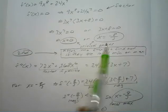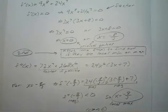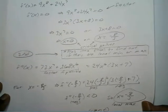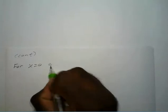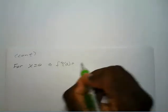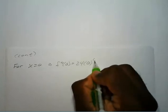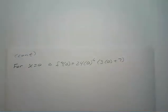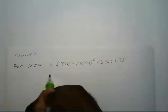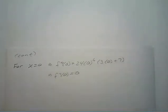Now we plug in our x equals 0. The second derivative at 0 equals 24 times 0 to the 6th power times 3 times 0 plus 7. This first part is 0 and this is 0, so we know that our second derivative at 0 is equal to 0.